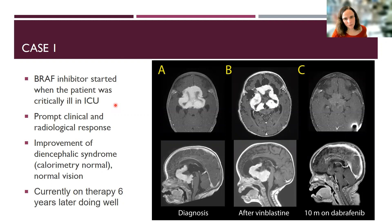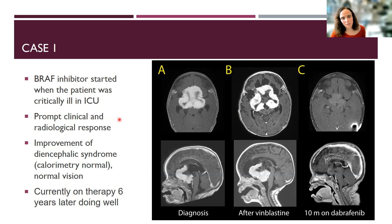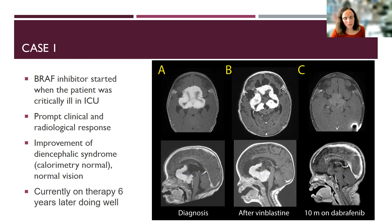This patient had a BRAF V600E mutation on immunohistochemistry, allowing us to sign out the integrated diagnosis as ganglioglioma, WHO grade 1, BRAF V600E mutant, without a CDKN2A deletion by FISH. The patient then went on to receive a BRAF inhibitor. At the time it was started, she was critically ill in the ICU. Within a week, she responded so well that she was out of the ICU and home within two weeks, with drastic improvement in her diencephalic syndrome, normal calorimetry, and normal vision. Her imaging at 10 months showed tremendous response, and six years down the line she is doing well, going to school, with only a little bit of vision impairment.